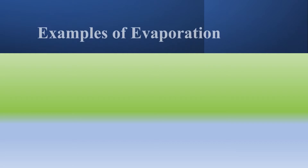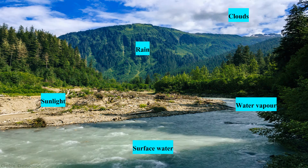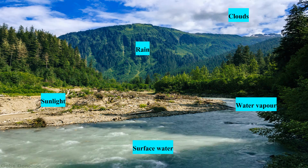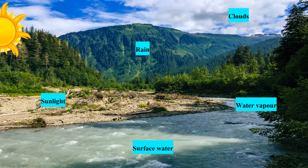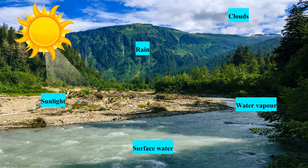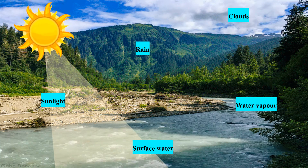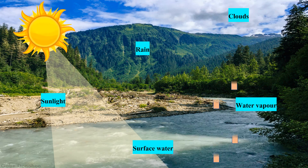The process of evaporation can be better understood if we see its examples in weather and in daily life. We can look at the rain cycle which will help you understand this process better. The molecules of water get energy in the form of sunlight or earth's heat, which turns it into vapour that goes into the upper atmosphere where it is much cooler.